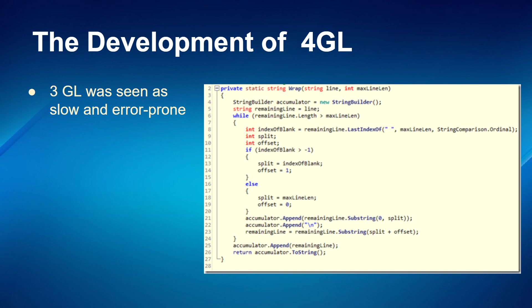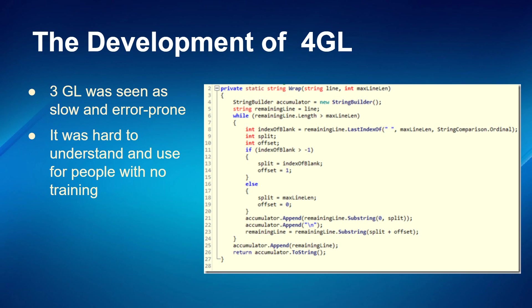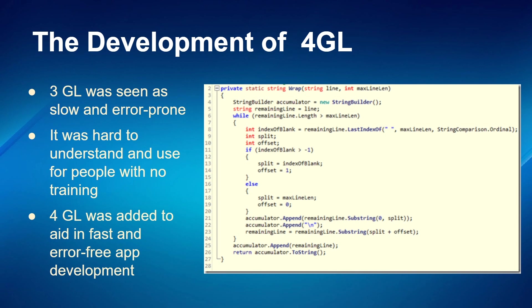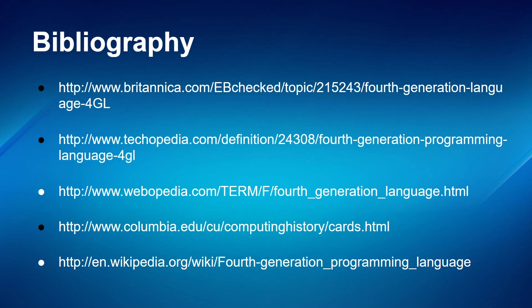4GLs developed out of the fact that people saw 3GLs as being slow and error prone. As you can see in the C code on the right, there's a lot of expectation that you know exactly what is being coded and how. 3GLs were hard for people to understand if they had no training. 4GL was added to aid faster and error-free app development. Fourth generation programming languages are used quite commonly today — every time you punch a query into Google, the script running behind it is a fourth generation language. You put the script code in, magic happens behind the scenes, and then comes back to you in the form of a response.